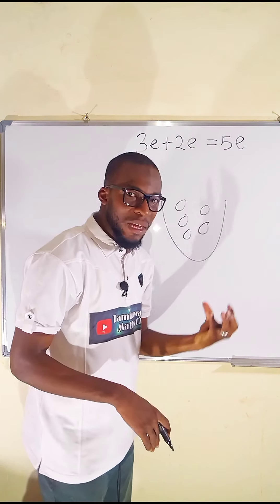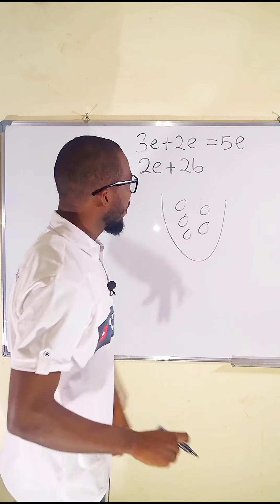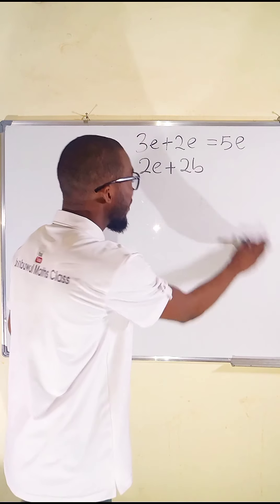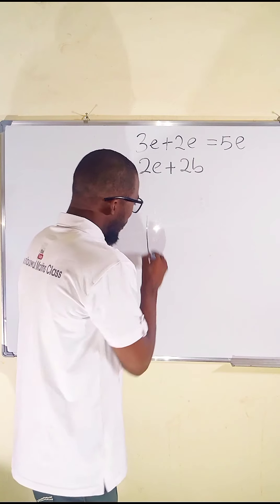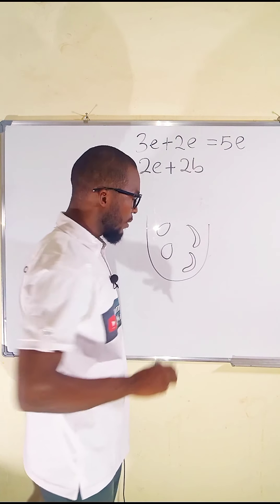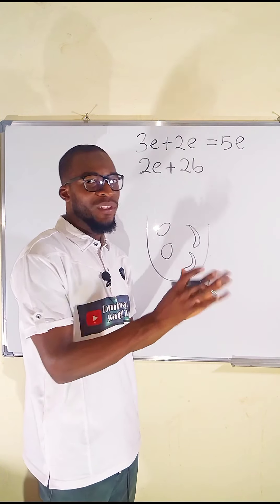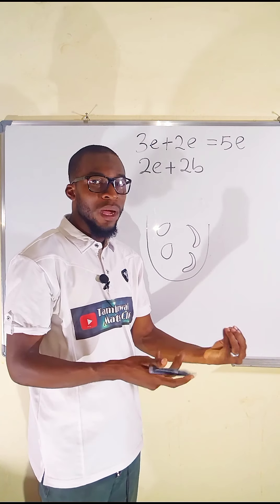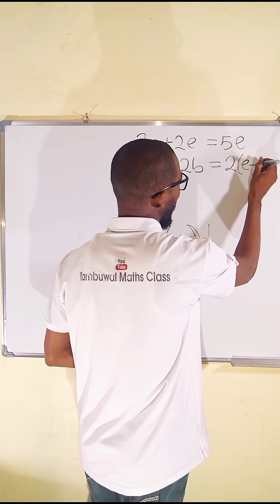That's about like terms. What about unlike terms? Suppose we have 2e plus 2b — we correlate e with egg and b with banana. They cannot be added together because they are not like terms. Egg is entirely different from banana. I have a basket with two eggs and two bananas. The only relationship they have is the number — both are two — so you have two eggs and two bananas.